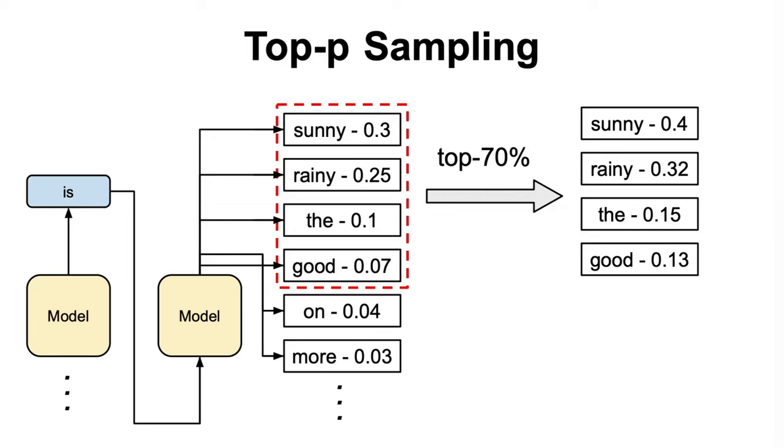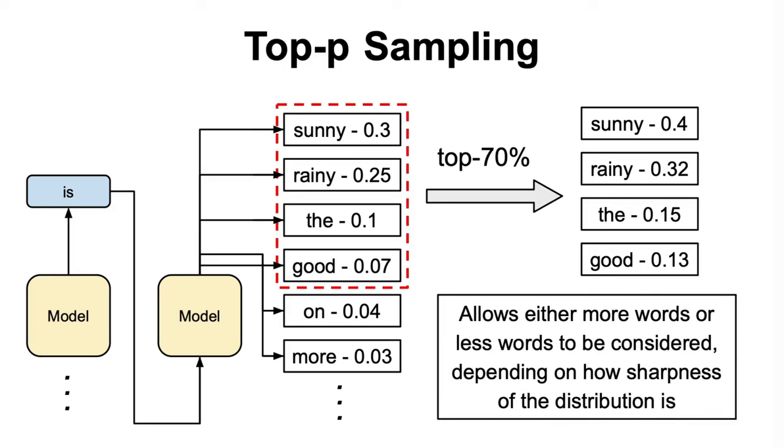By dynamically adjusting the set size based on probabilities, top-p sampling allows for more adaptive control over the randomness of the generated text, allowing either more words or less words to be considered depending on the sharpness of the distribution.